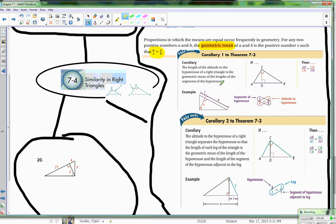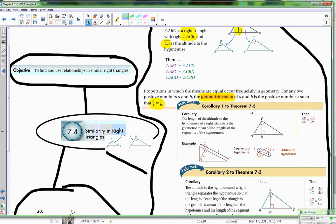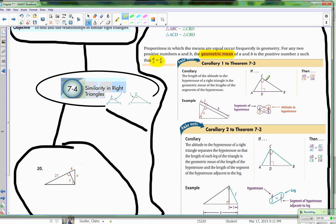And then in real speak, it means if we have this scenario like we do in 7-3, then AD over CD, which is this portion of the hypotenuse...